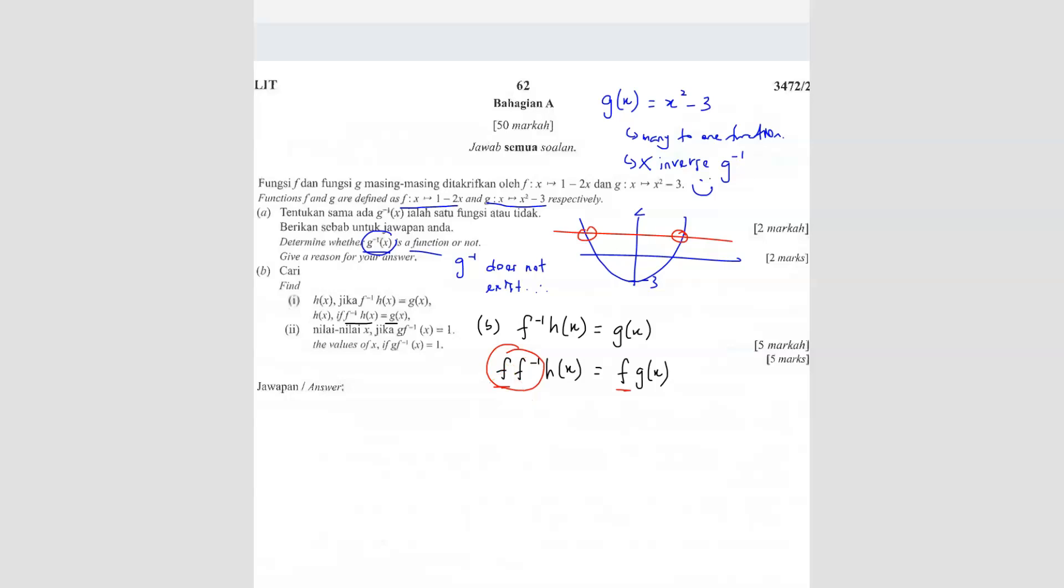What you have is you only have h(x) left, and then here is f(x)·g(x). So h(x) equals, you're going to substitute g(x) into f(x). So 1 - 2(x² - 3). You get 1 - 2x² + 6. Answer is 7 - 2x².